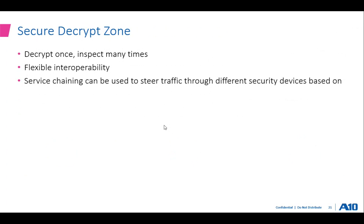Decrypt once and inspect many times — once we decrypt, you can send the traffic to multiple security devices. We are flexible and interoperable, supporting inline or passive mode as well as ICAP-enabled devices. We support proxy chaining for connecting to upstream proxies, and service chaining can steer traffic through different security devices based on source/destination IP addresses, protocol type, user or group ID, and application ID.